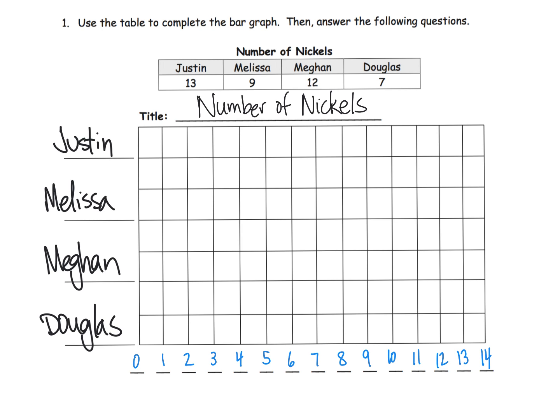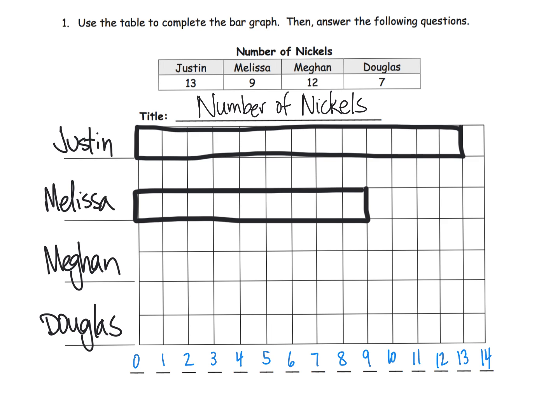All right, so now just being able to graph—pretty straightforward. We have Justin with 13 nickels, so Justin's bar graph is going to go all the way that long, right there. So there is Justin's bar graph, and we know because it lines up perfectly with the 13. Melissa has 9, so Melissa is going to go right there, and we know it's right because we lined it up with the 9.